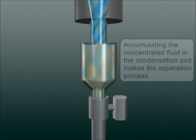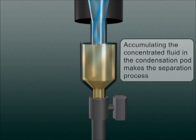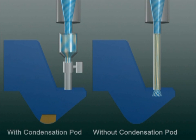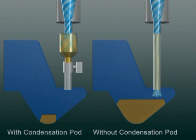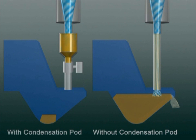Here the sludge is accumulated to a maximum concentration within the pod without any water flow, allowing even a very small precipitation conveyor to handle the precipitation. There is a clear difference with filtration systems without a condensation pod.